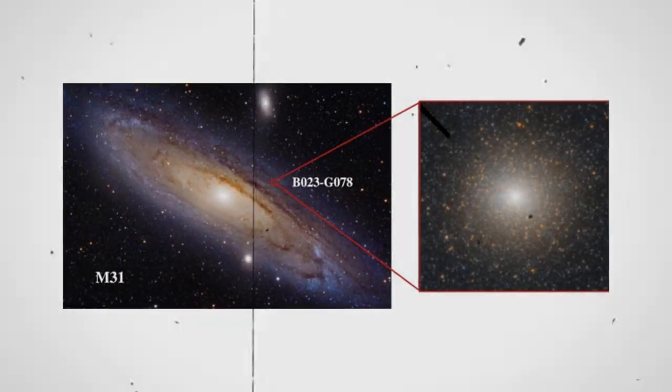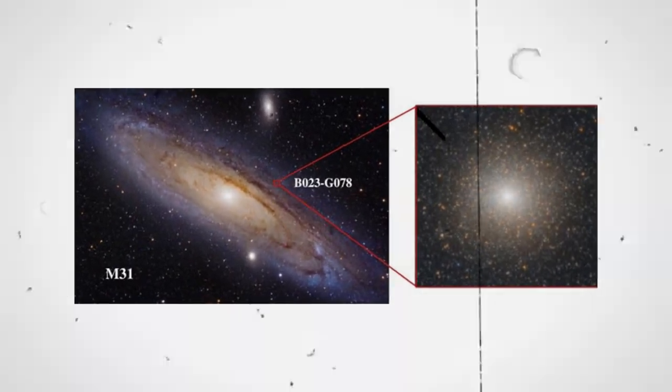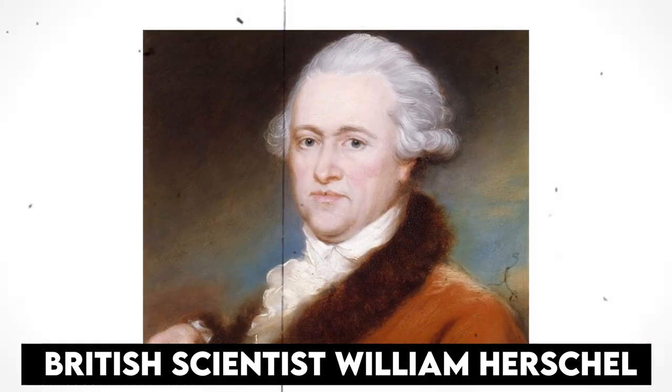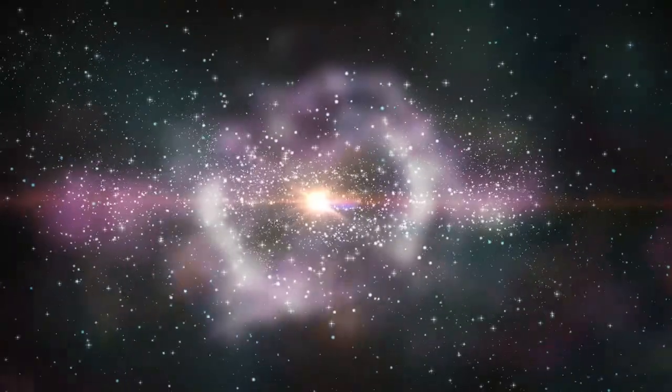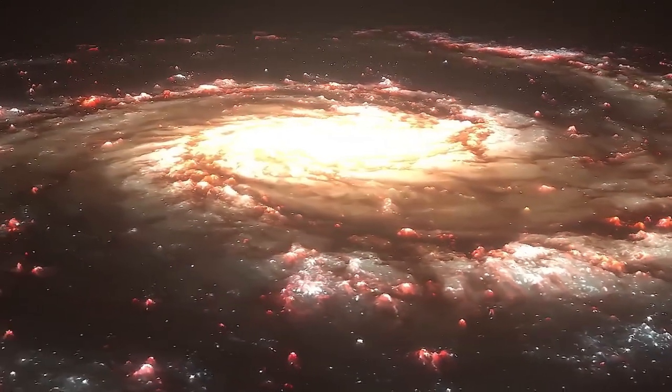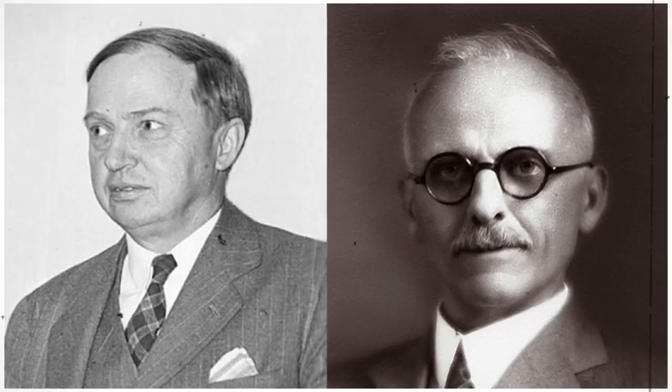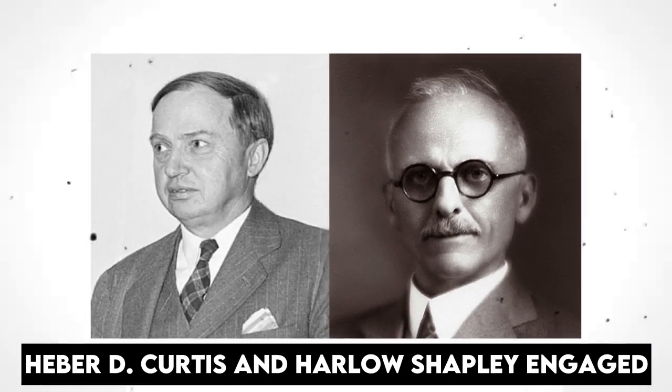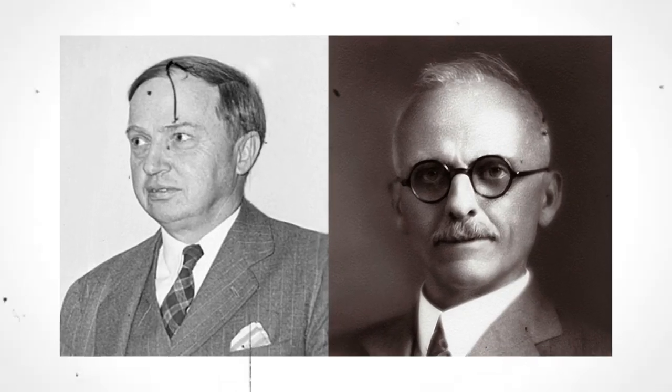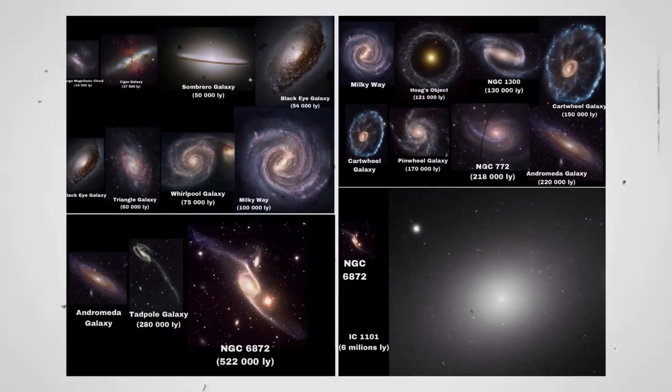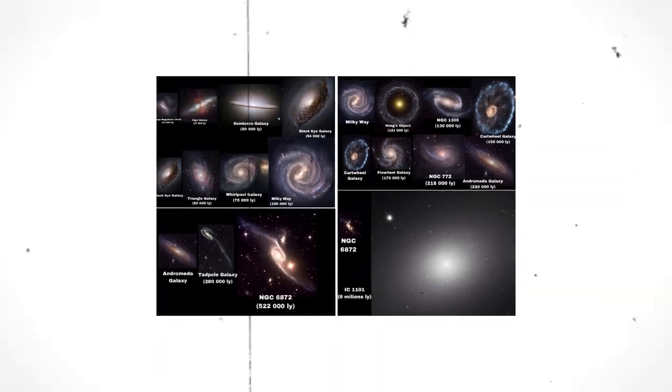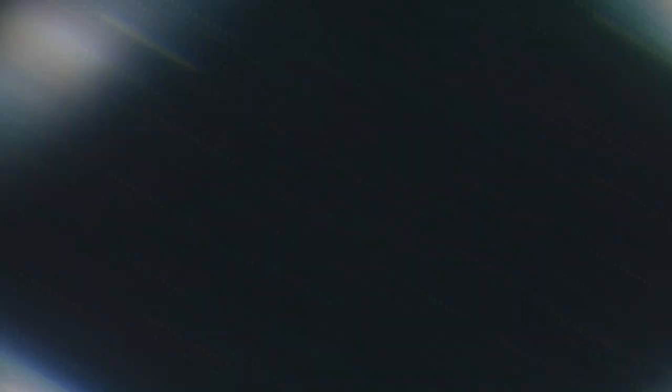But M31's brightness made it a subject of particular intrigue for astronomers, including British scientist William Herschel, who believed it to be the nearest of the universe's great nebulae. Astronomers Herbert E. Curtis and Harlow Shapley engaged in the great debate concerning the size of the cosmos in 1920, and the Andromeda nebula had a role in it.